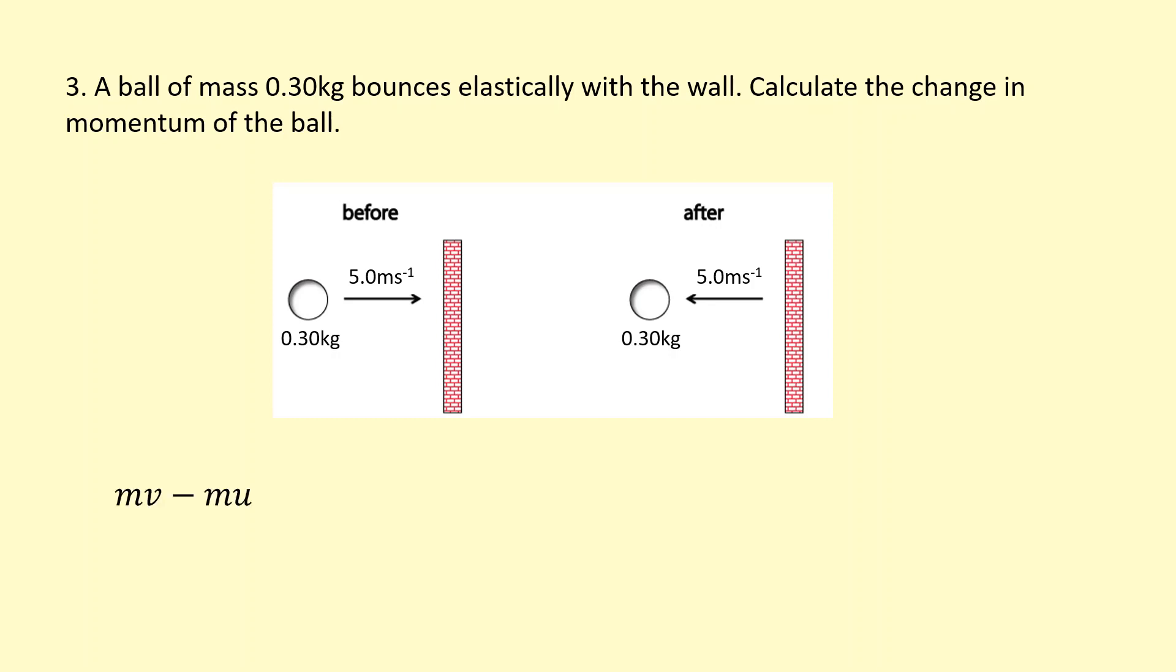So we need to use this formula very carefully. So final momentum minus initial momentum. Final momentum is mass 0.3 times minus 5, because it's going towards the left. I'm going to define left as negative. Minus initial momentum, which is 0.3, the mass, times positive 5 because it's going towards the right. So that gives me a total change of minus 3.0 kilogram meters per second. Or I can use newton seconds as well as a unit if I wanted.